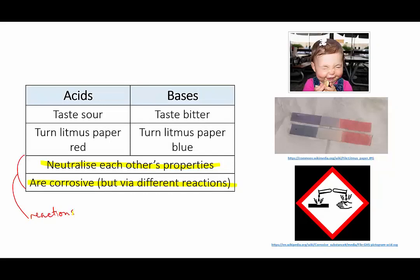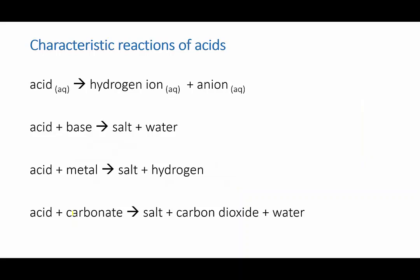We're going to look specifically at some of these characteristic reactions that acids undergo. I've written them out here in a generic form — not specifying what acid, base, metal, or carbonate at this point. The point is that as long as you know what class of substance is reacting, the reaction will always follow the same general form, and once you choose your reactants, you can predict what the products will be.